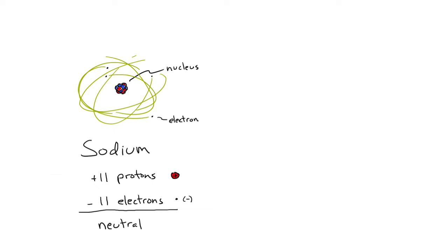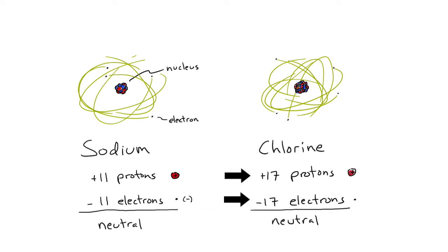Consider also a neutral chlorine atom, which has 17 protons and 17 electrons. Watch what happens when the sodium atom loses an electron to the chlorine atom.